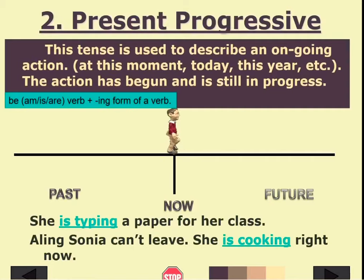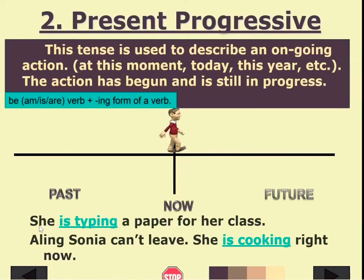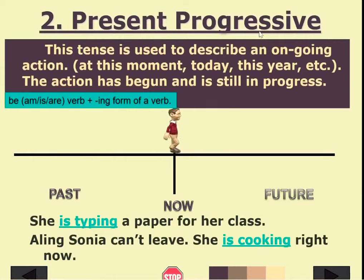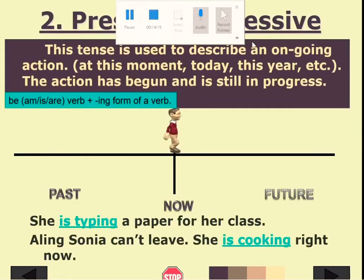The pattern for present progressive tense uses a be verb — am, is, or are — depending on the subject, plus the ing-form of the verb. For example: 'She is typing' — we use 'is' because the subject is singular, and 'type' becomes 'typing.' 'She is cooking' — we use 'is' and add '-ing' to 'cook.' This is also called present continuous.